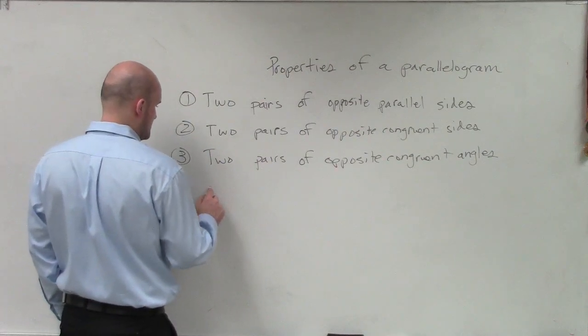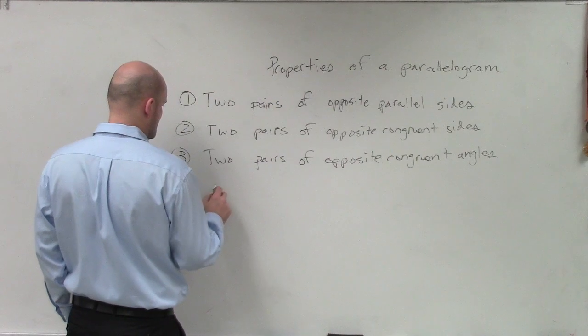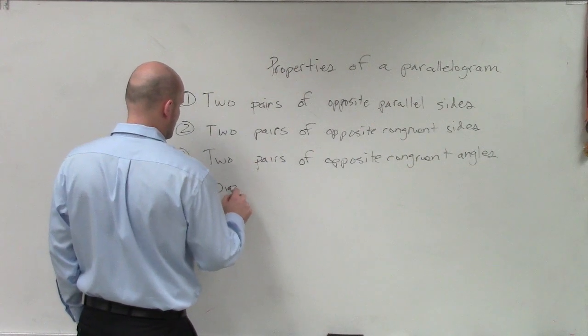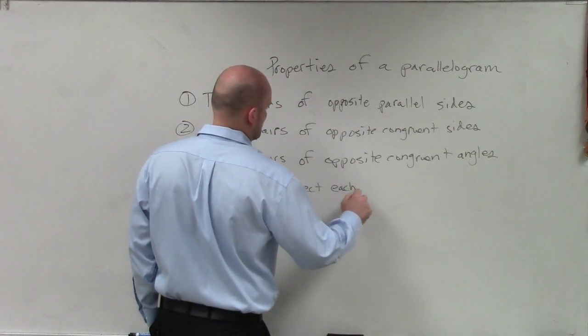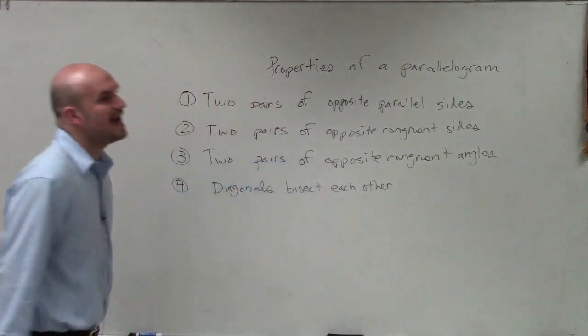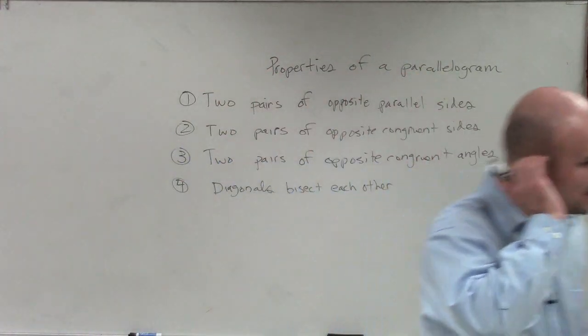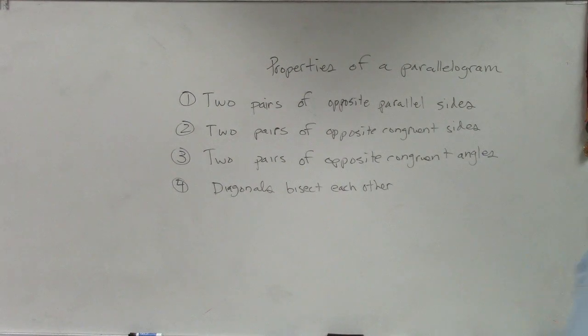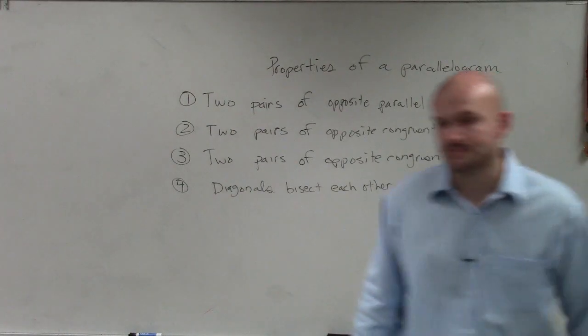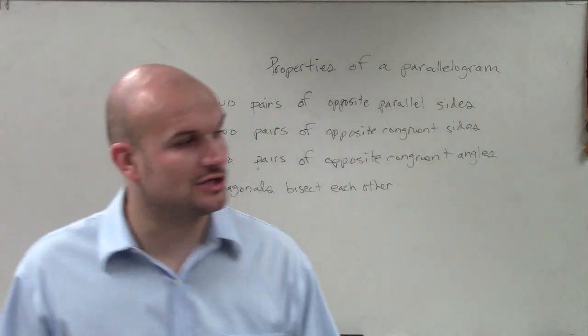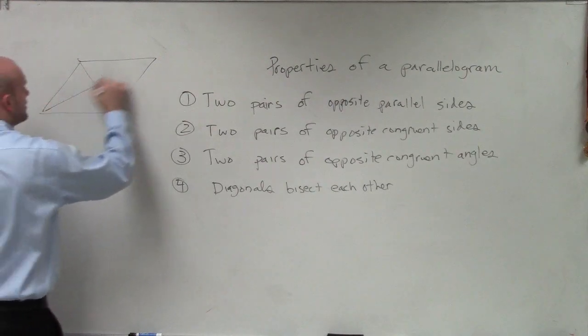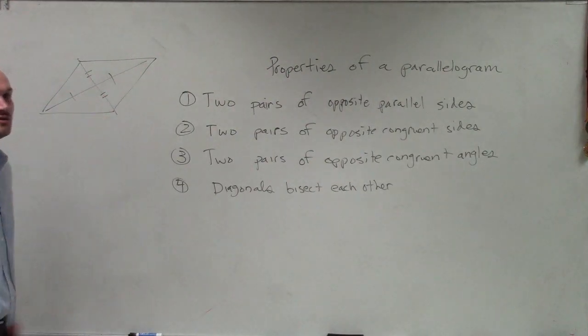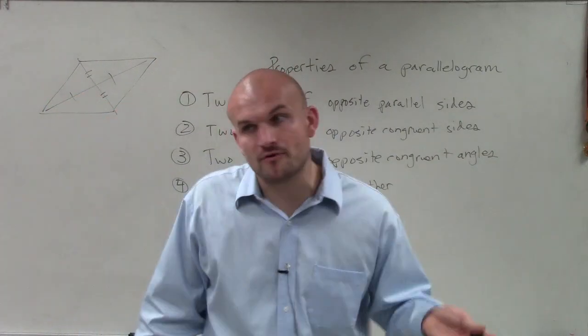The next one, if you take the diagonals, right? So if their diagonals bisect each other, so if you're shown with a figure, if I give you guys a figure that looks like this, it looks like a parallelogram, and it says these two are equal, those two are equal, what that tells you is the diagonals bisect each other. So therefore, it has to be a parallelogram.